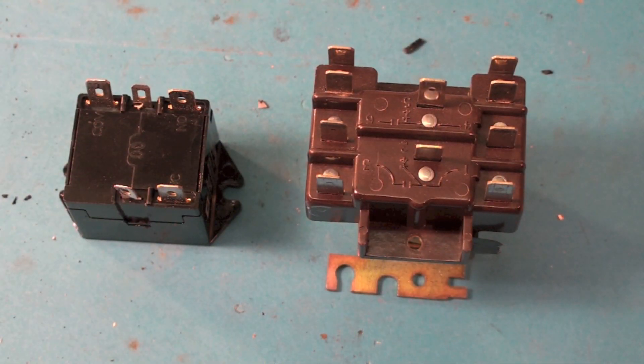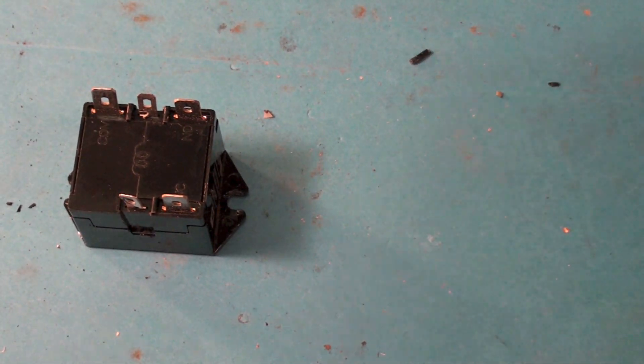Okay, in this one we're going to take apart a couple of these relays just to look and see what's inside them. We'll start with a single pole double throw.